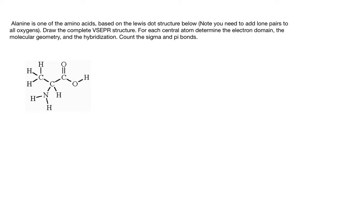This question says alanine is one of the amino acids. Based on the Lewis structure below, in this case you need to add some lone pairs particularly to the oxygens to make sure they have octet. Draw the complete VSEPR structure for each central atom. Determine the electron domain, the molecular geometry, and the hybridization. Count the sigma and pi bonds.